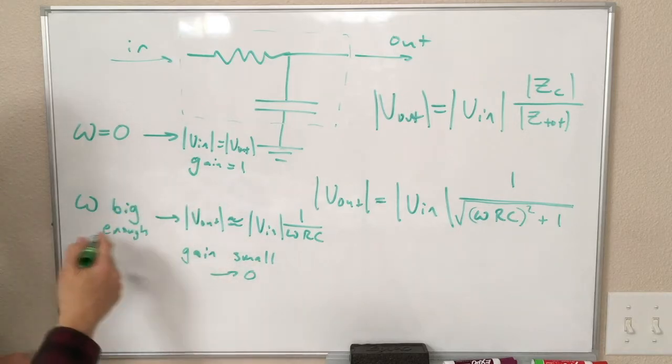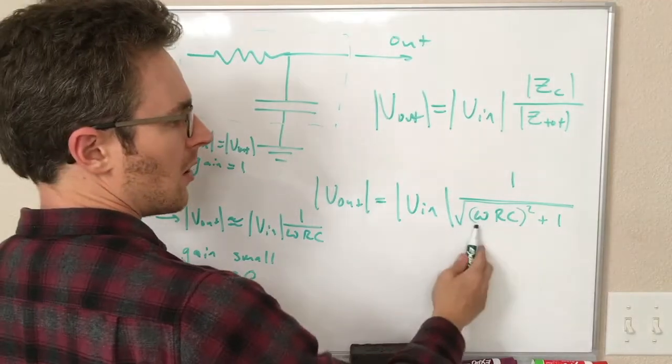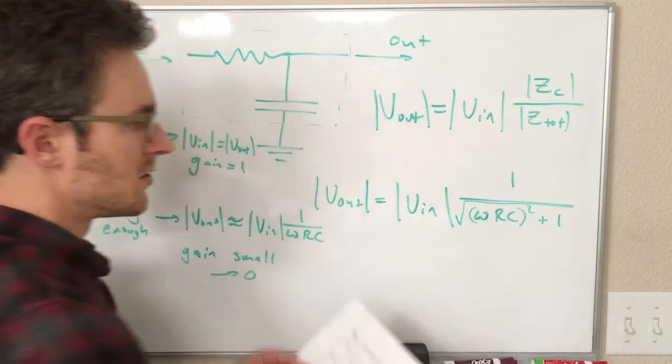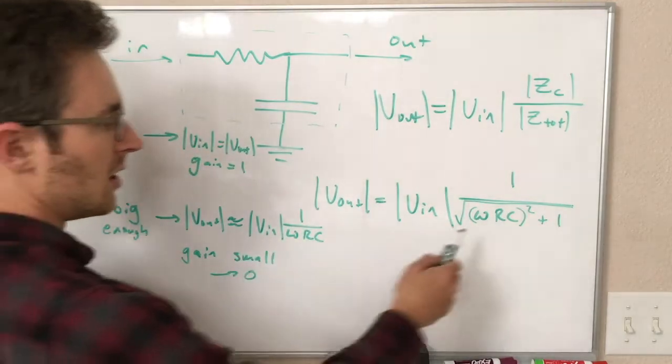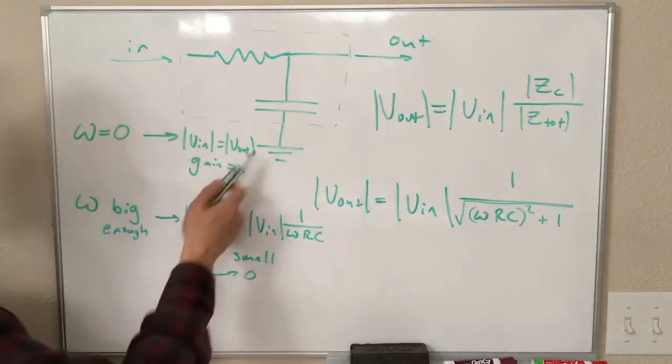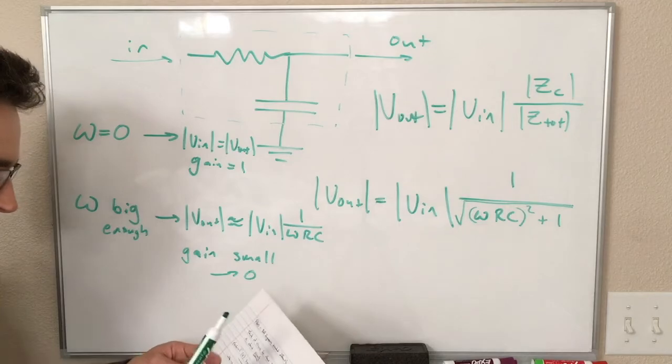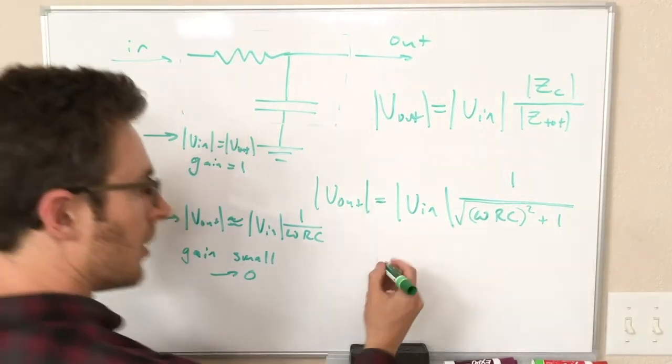The shift between these two behaviors, when is omega big enough? That's this comparing omega RC to 1. If omega RC is much, much bigger than 1, this wins. If omega RC is much, much smaller than 1, this wins. This turning point happens when omega RC equals 1.